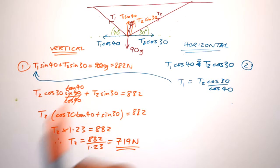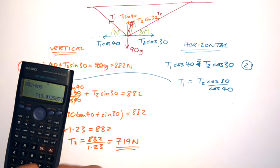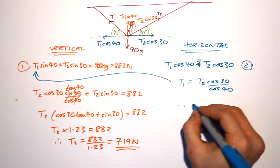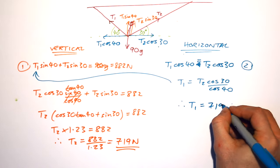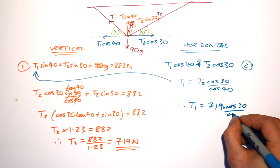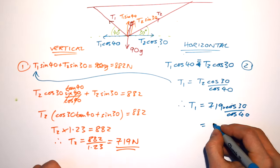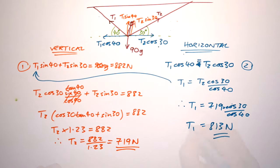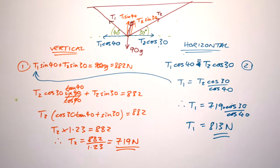Popping T2 back into the rearranged equation 2: T1 = 719 times cos 30 / cos 40, which gives 813 Newtons. That's how you resolve forces to find the tensions required for a system to be in equilibrium. Practice is key. If you're happy with balanced forces, have a look at my Newton's second law video, which covers what happens when a system isn't in equilibrium and there is a resultant force leading to acceleration.